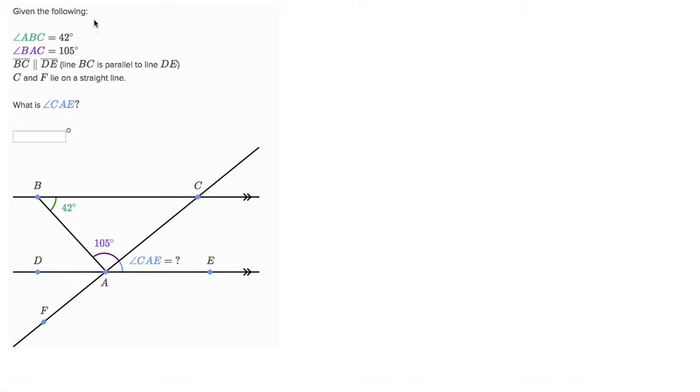Alright, so here we have a problem, and it's going to be finding angle measures given some parallel lines and a transversal, which also creates a triangle here. We were given some information that'll help us find this missing angle, CAE. The information given is that angle ABC is 42 degrees, angle BAC is 105 degrees, and that line BC here is parallel to line DE. So these two lines are parallel.